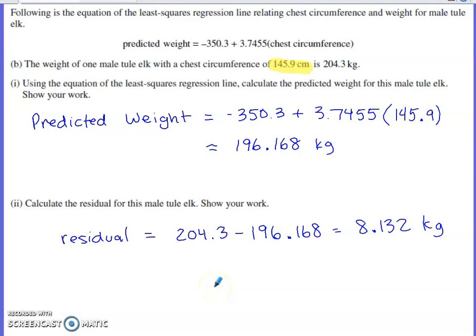Part 2 of Part B asks us to calculate the residual for this male tule elk. A residual is always the actual data point minus what's predicted for that data point from the least squares regression line equation. So the actual y was 204.3 minus the predicted y that we computed gives us the residual. When a residual is positive, that means the predicted value was beneath the actual value, and when a residual is negative, that means that the least squares regression line predicted a value higher than the actual data point.